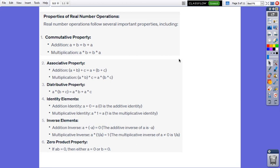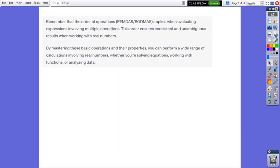The properties of real numbers are commutative property, associative property, distributive property, identity property, inverse property, and zero property. Remember that the order of operations, or PEMDAS, applies when evaluating expressions involving multiple operations. This order ensures consistent and unambiguous results when working with real numbers. By mastering these basic operations and their properties, you can perform a wide range of calculations involving real numbers, whether you are solving equations, working with functions, or analyzing data.